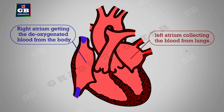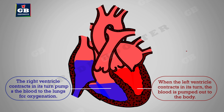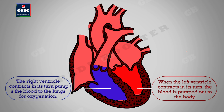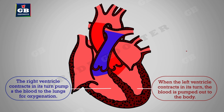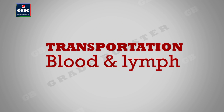The left atrium and right atrium relax: the left atrium collects blood from the lungs and the right atrium gets deoxygenated blood from the body. As they contract, the left and right ventricles expand so blood is transferred to them. When the left ventricle contracts, blood is pumped out to the body; the right ventricle contracts and pumps blood to the lungs for oxygenation. In higher animals like birds and mammals, the four-chambered heart keeps oxygenated and deoxygenated blood separate. The circulation of blood through the heart takes place twice — once between heart and lungs and again between heart and body parts — hence this is called double circulation.